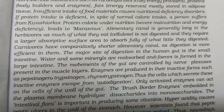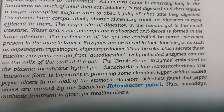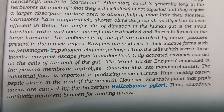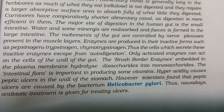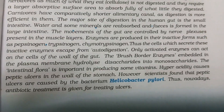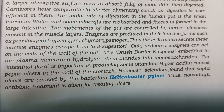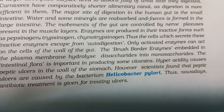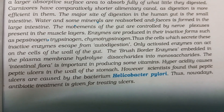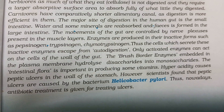Enzymes are in this gland in the digestive system in an inactive state — pepsinogen, trypsinogen. Thus the cells which secrete these inactive enzymes escape from autodigestion; only activated enzymes can act in the cells of the walls of the gut.